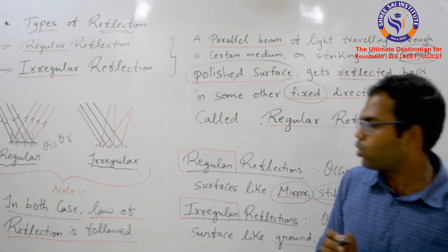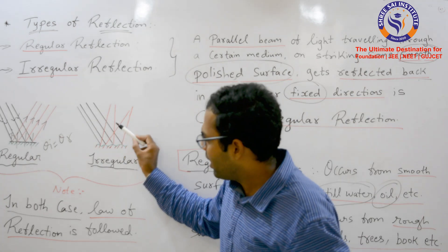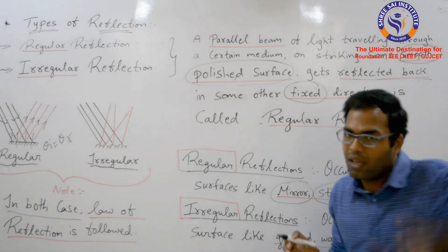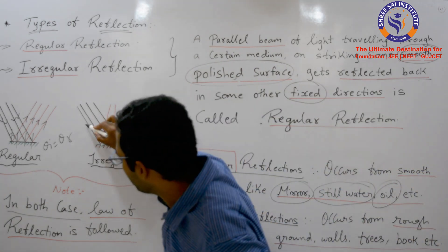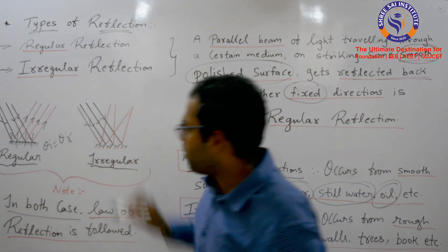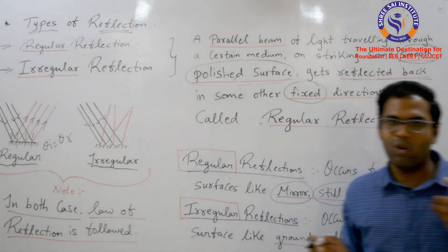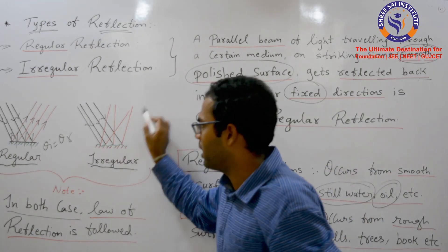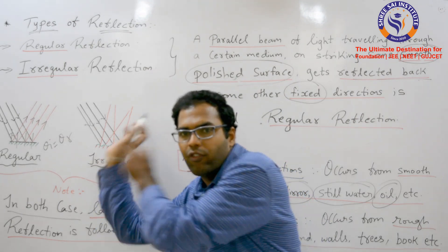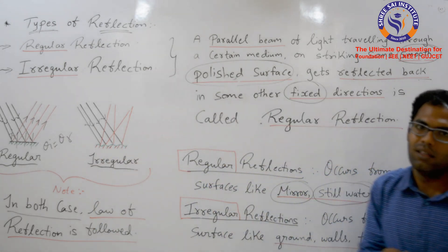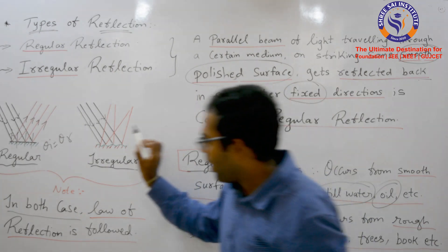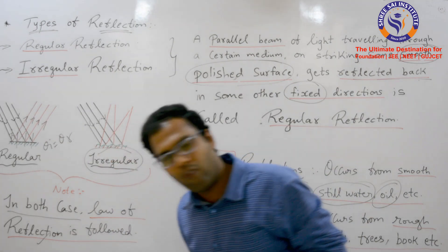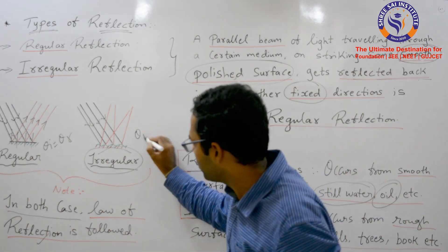In irregular reflection, you can see that reflection happens but the rays travel in a non-uniform direction — a random direction or a different direction. But even in this type of reflection, the law of reflection is followed: theta i is equal to theta r.